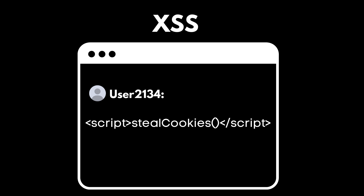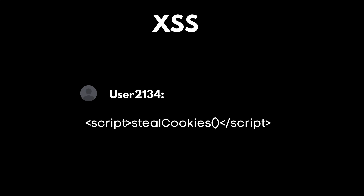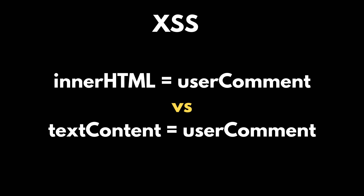If your API returns user-generated content, like a comment or a profile name, and your frontend blindly inserts it into the HTML without sanitizing it, you're vulnerable. An attacker could post a comment that contains a script tag that steals everyone's session cookies. The solution is to always sanitize or escape user input before rendering it. Treat all user data as plain text, not executable code.